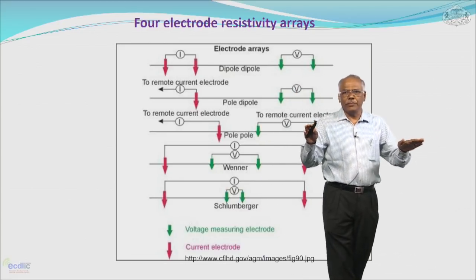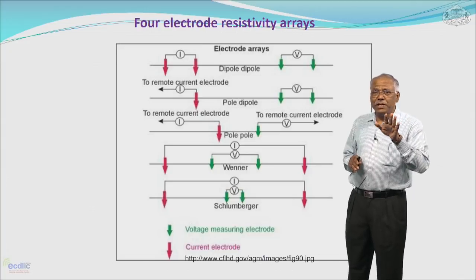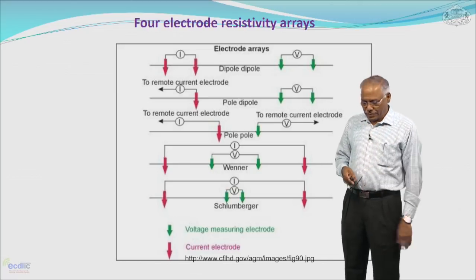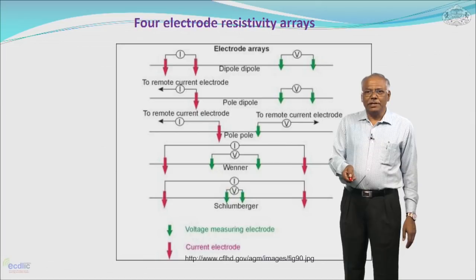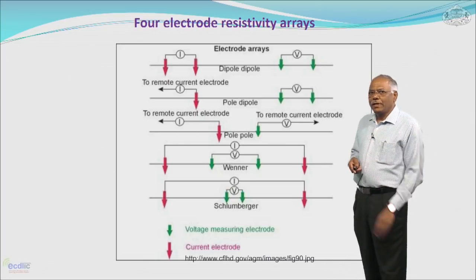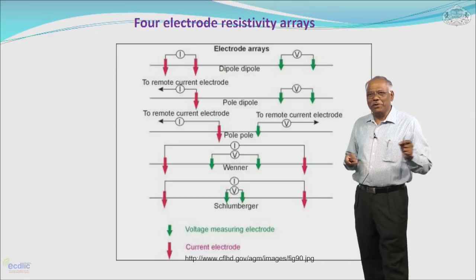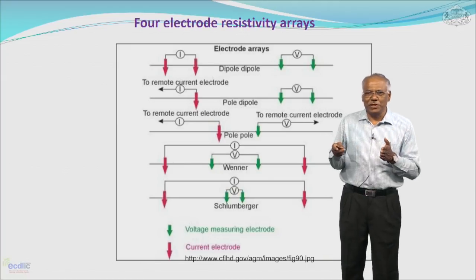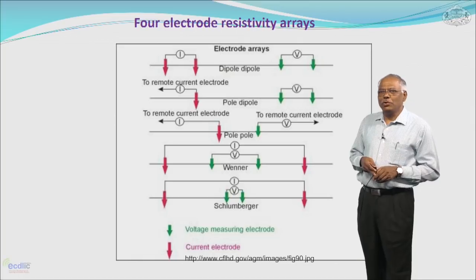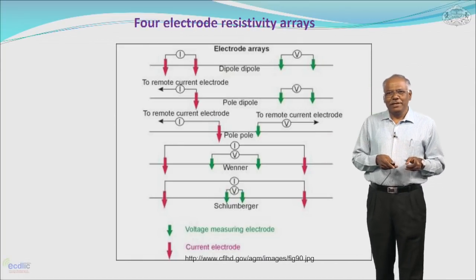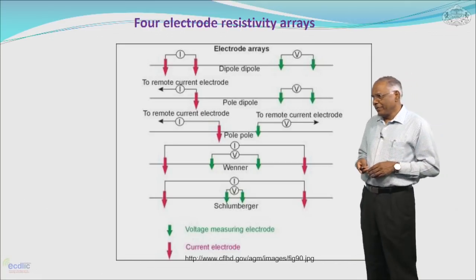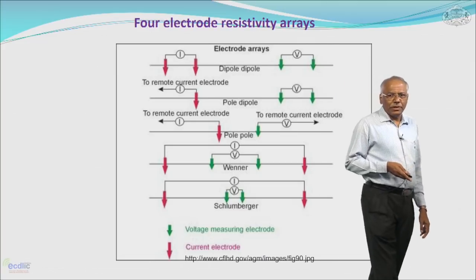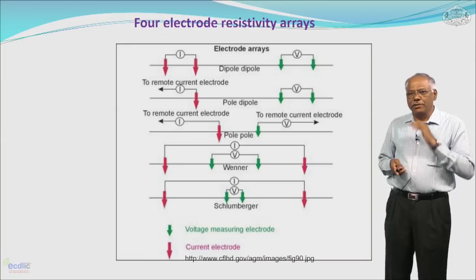There are various electrode configurations in use — three or four different kinds of electrode arrays currently in practice. One is dipole-dipole, another is pole-dipole with three electrodes where one is a current electrode and two are potential electrodes, and there is also pole-pole with one current and one potential electrode. Apart from these, the most popular configurations used in practice are the Wenner electrode configuration and the Schlumberger electrode configuration.